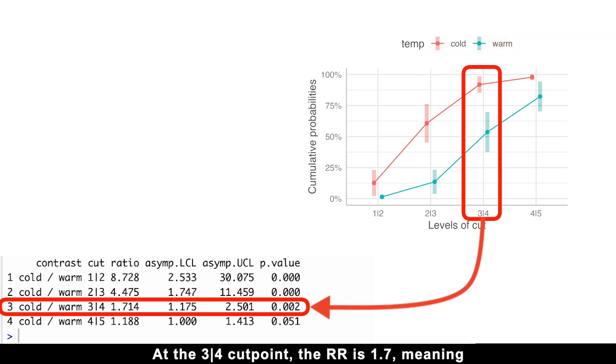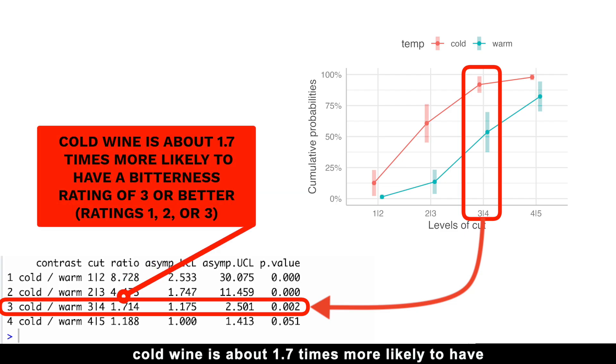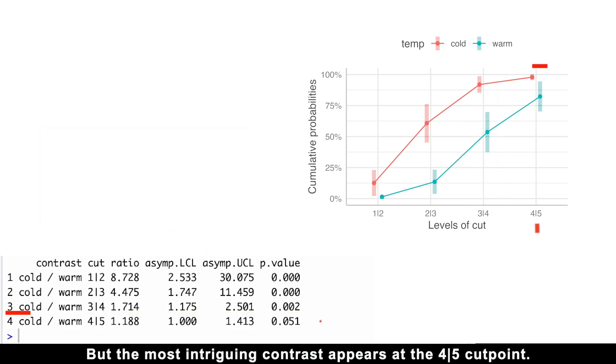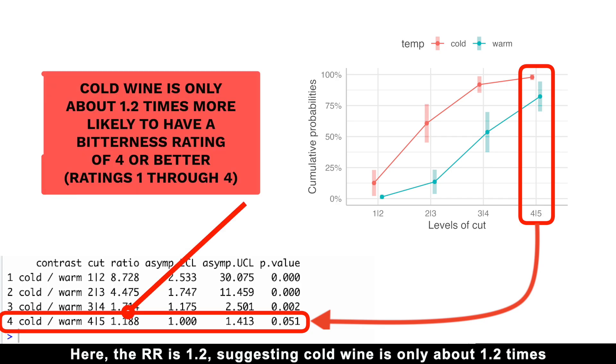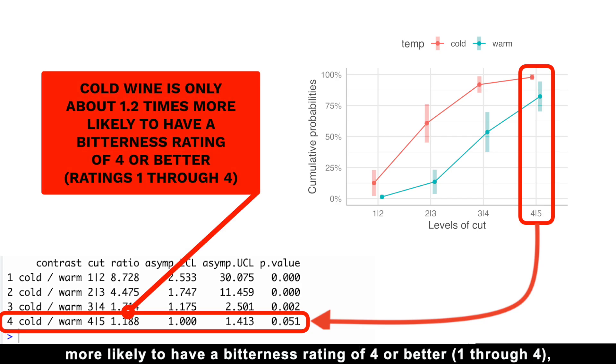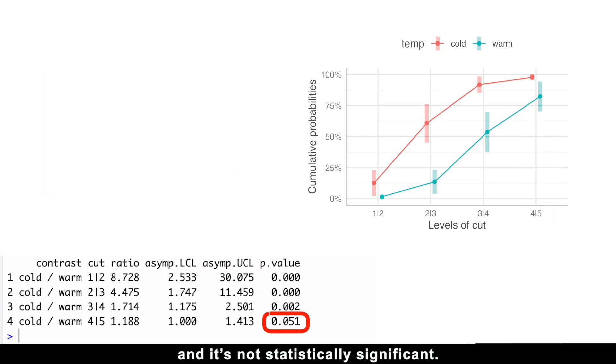At the 3-to-4 cut point, the risk ratio is 1.7, meaning cold wine is about 1.7 times more likely to have a bitterness rating of 3 or better. But the most intriguing contrast appears at the 4-to-5 cut point. Here, the risk ratio is 1.2, suggesting cold wine is only about 1.2 times more likely to have a bitterness rating of 4 or better.